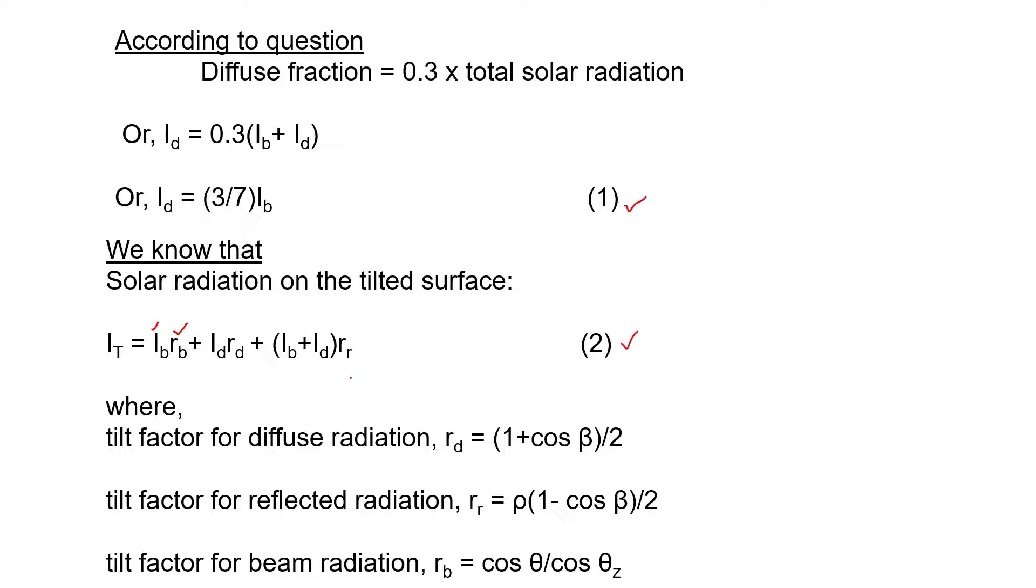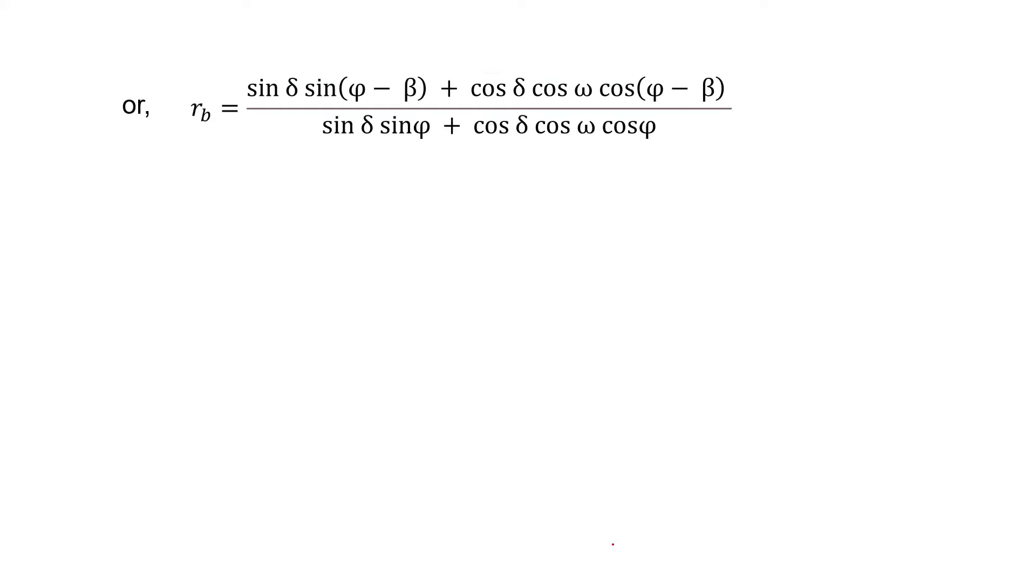Theta is the incident angle on the tilted surface, and theta z is the incident angle on the horizontal surface. After we put the value of cos theta and cos theta z, the numerator is the value for cos theta and denominator is the value for cos theta z.